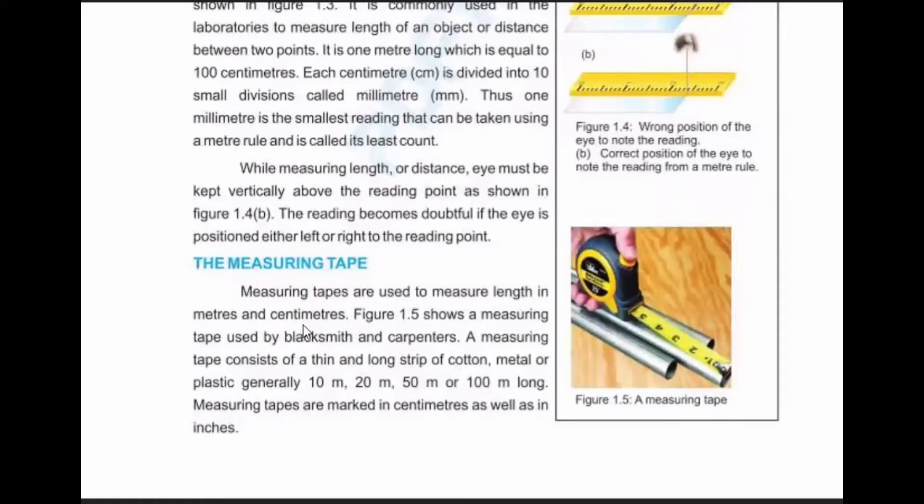The measuring tape can show length in meters and centimeters. Figure 1.5 shows a measuring tape used by blacksmiths and carpenters. The measuring tape consists of a thin and long strip of cotton, metal, or plastic, generally 10 meter, 20 meter, 50 meter or 100 meters long. Measuring tapes are marked in centimeters as well as in inches.